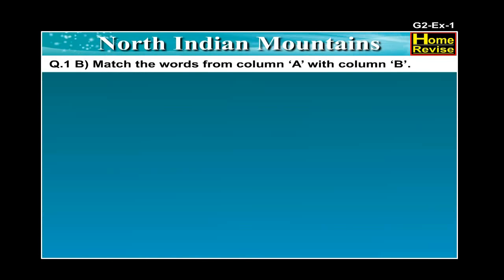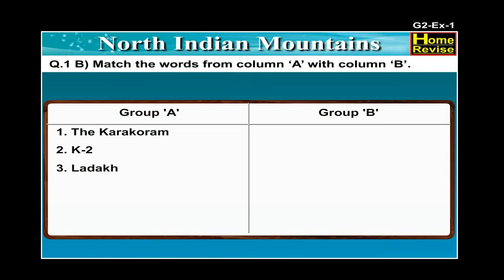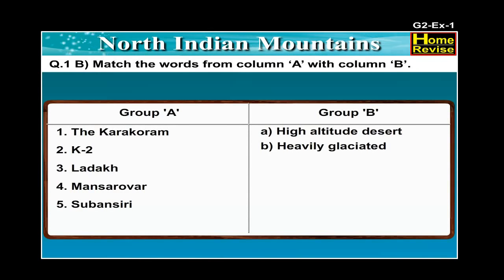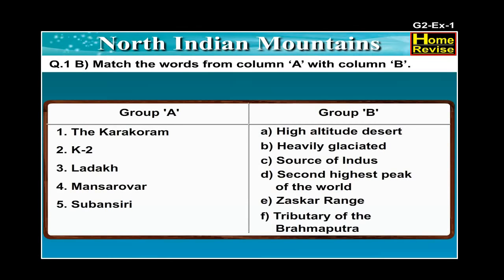B. Match the words from Column A with Column B. Column A: Karakoram, K2, Ladakh, Mansarovar, Subansiri. Column B: high altitude desert, heavily glaciated, sources of Indus, second highest peak of the world, Zaskar range, tributary of the Brahmaputra.